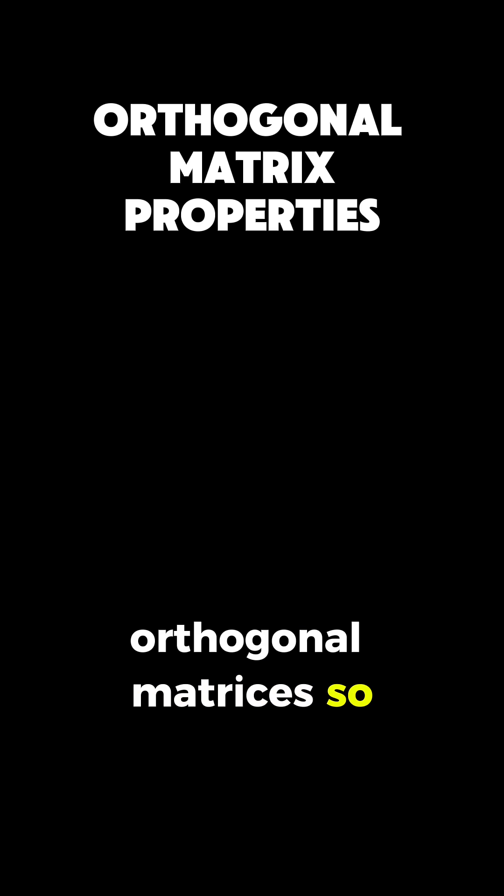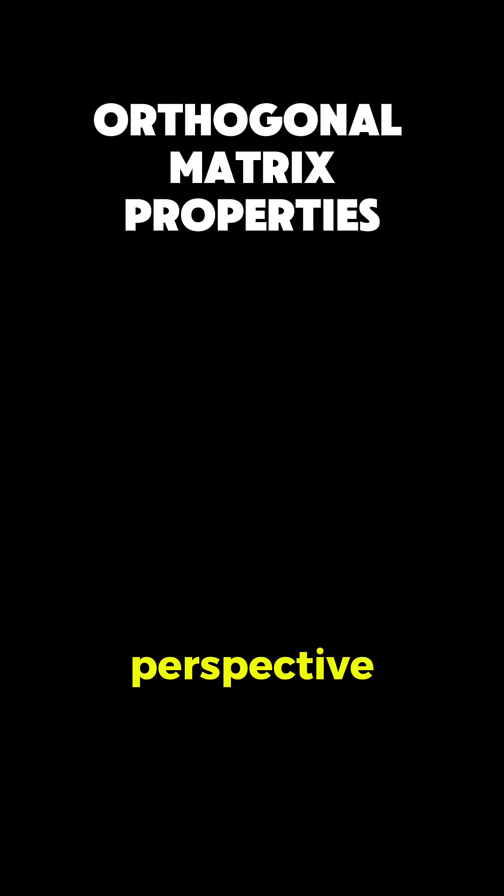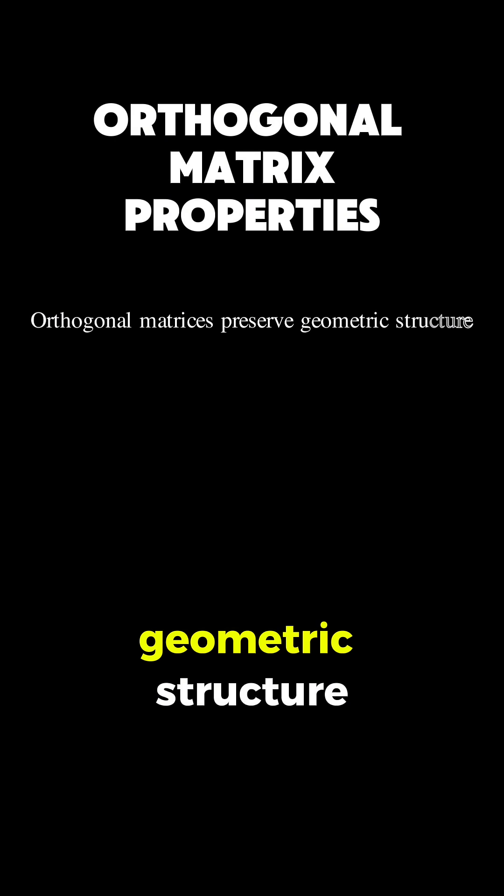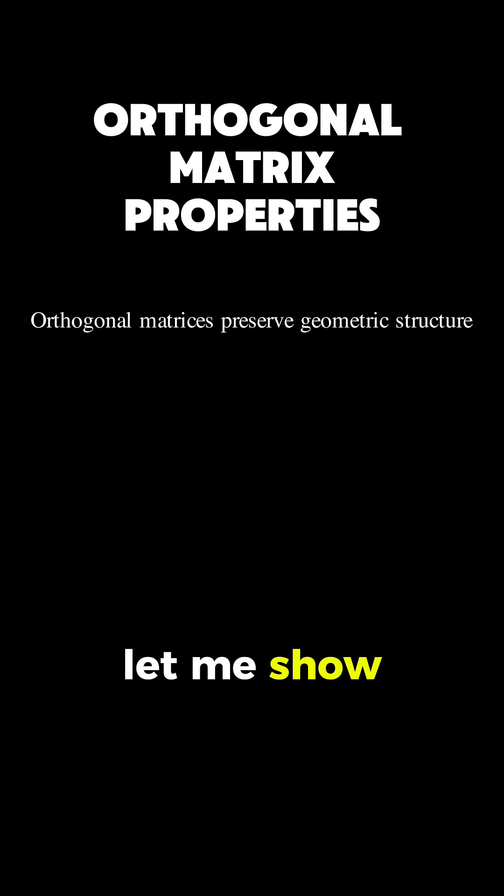What makes orthogonal matrices so special from a geometric perspective? Well, it turns out they preserve fundamental geometric structure. Let me show you two key properties. First, orthogonal matrices preserve lengths. If you take any vector v and multiply it by an orthogonal matrix Q, the length of Qv equals the length of v.